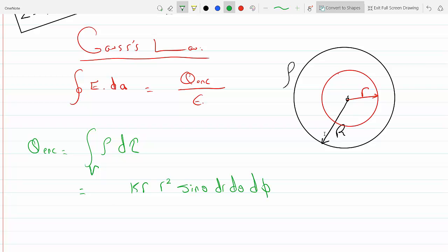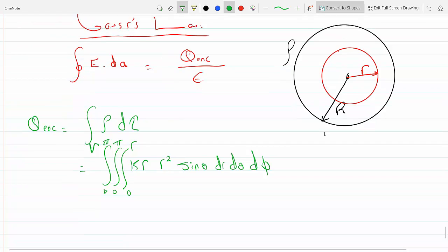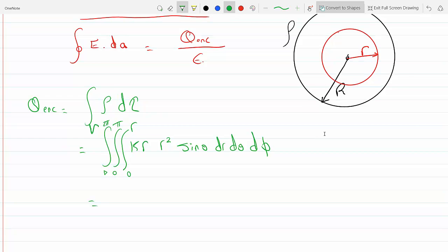And triple integral from zero—let's call this r prime—from zero to r, and theta goes from zero to pi, and phi goes from zero to 2π.